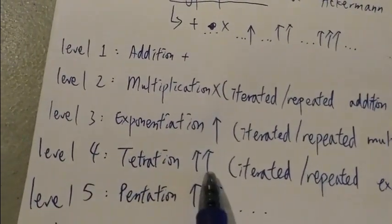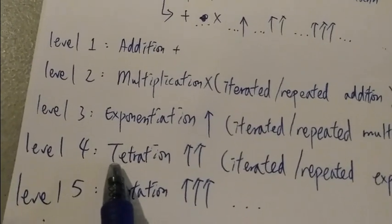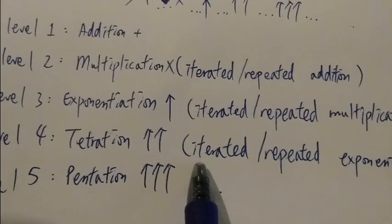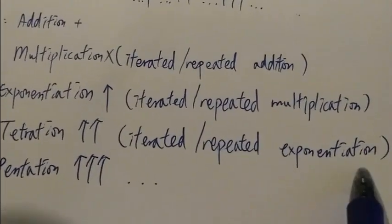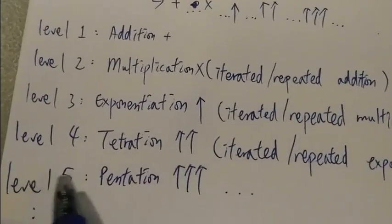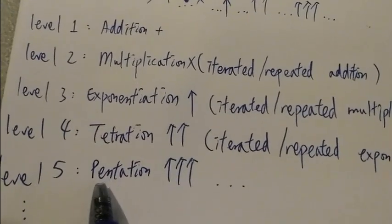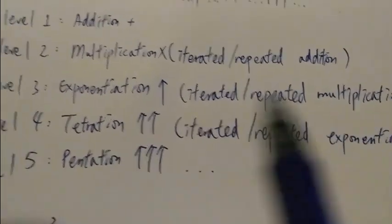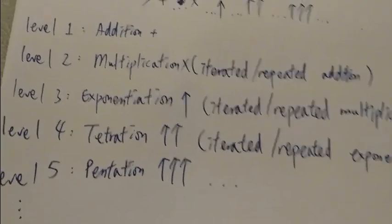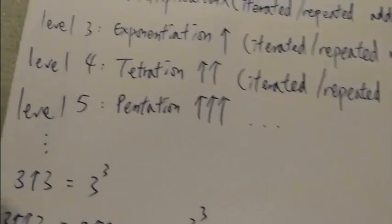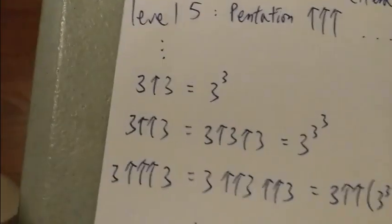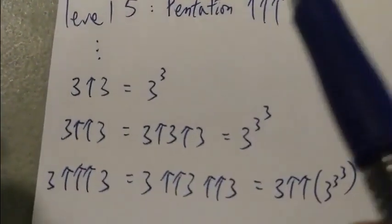For 2 arrows, it is known as tetration, which is level 4, which is iterated or repeated exponentiation. For level 5, the next level is called pentation, which is iterated tetration, which is represented by 3 up arrows. You can keep going. Let's say level 6, level 7, and so on. So let's look at some examples here.